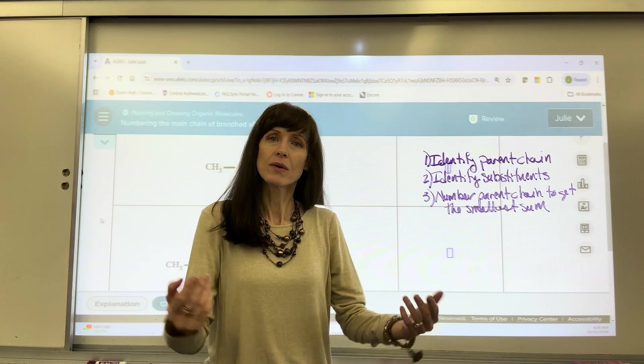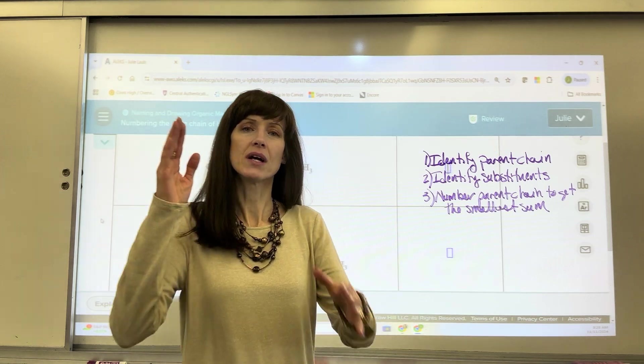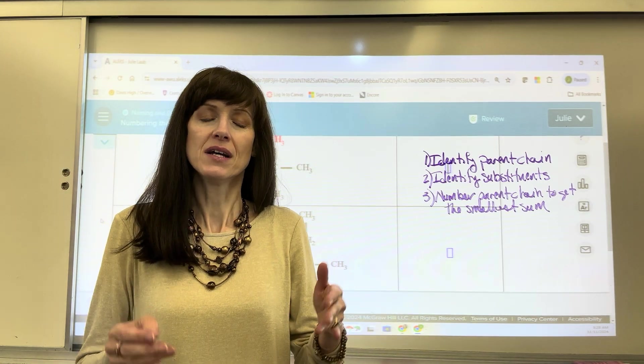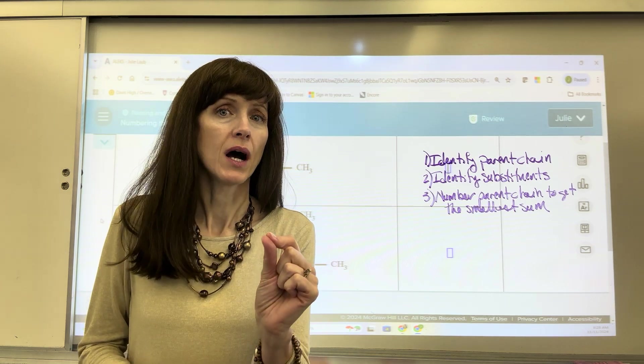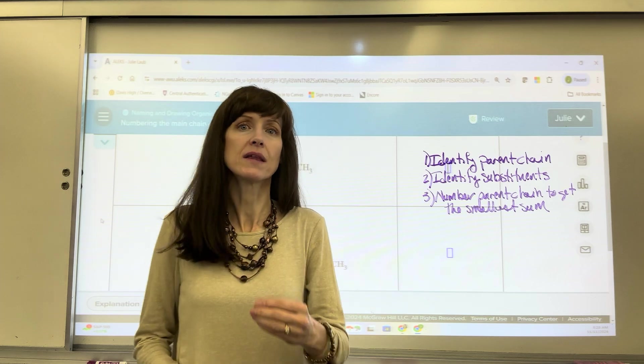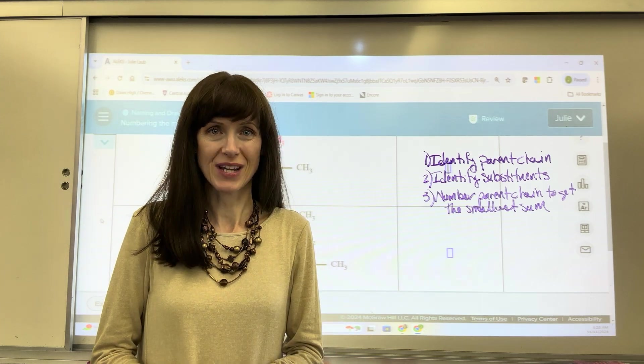And then number three, we number them. You can either number it left to right or right to left. The deciding factor is the smallest sum of the substituent locations is the way that you number that branched chain.